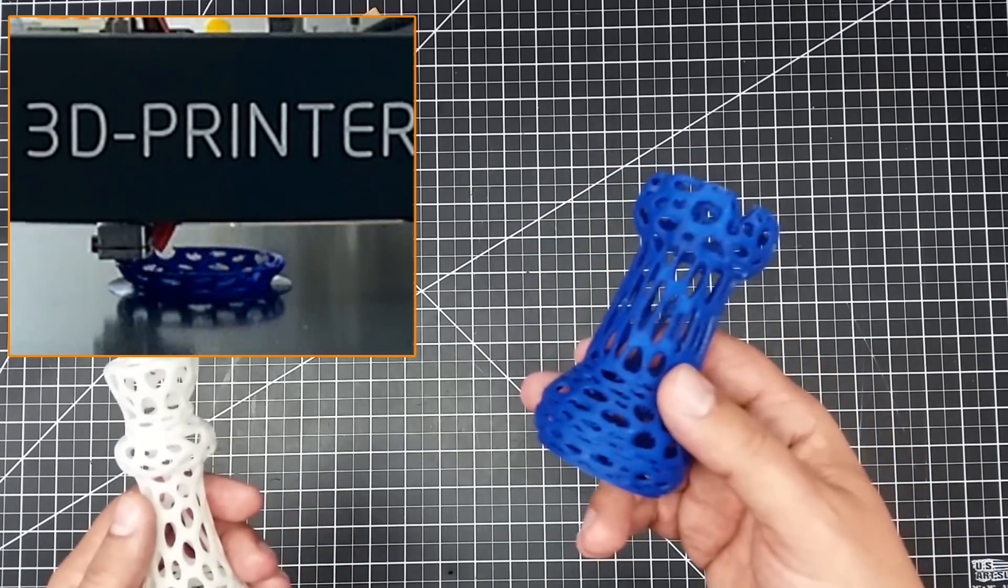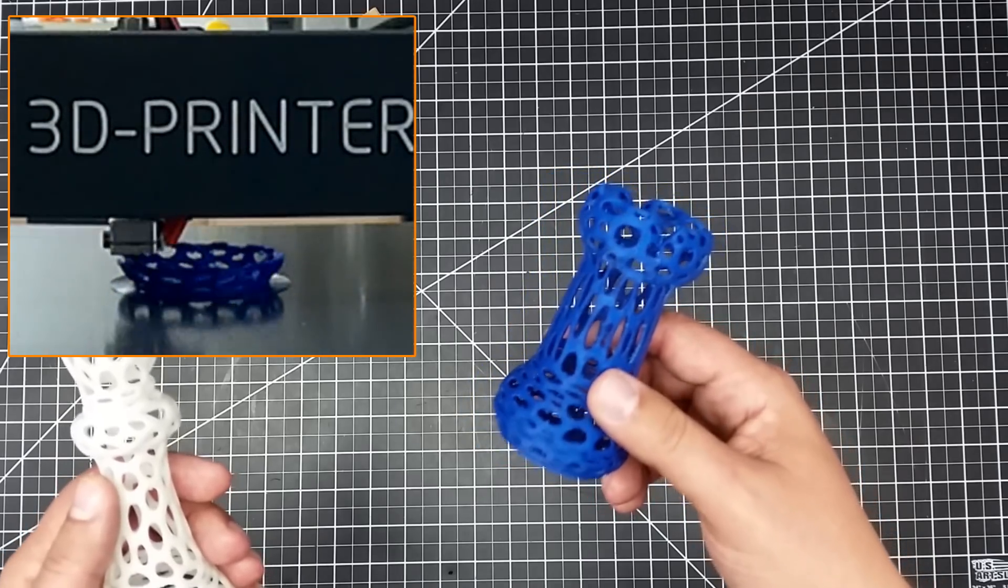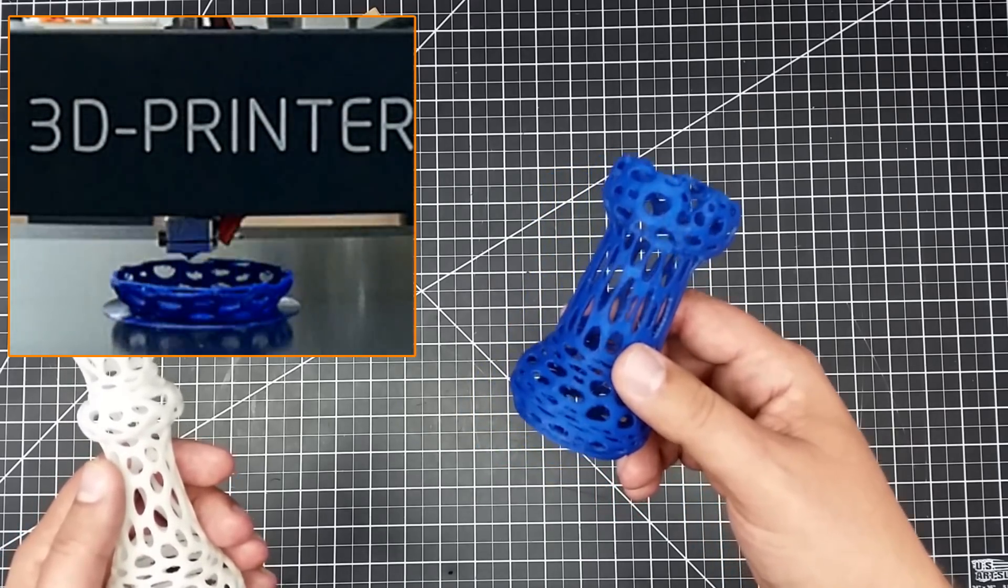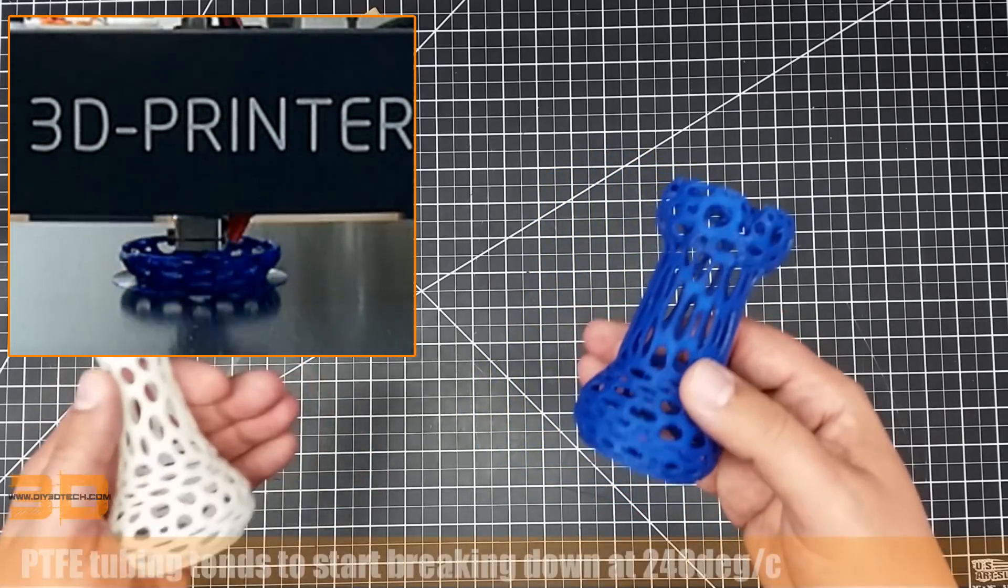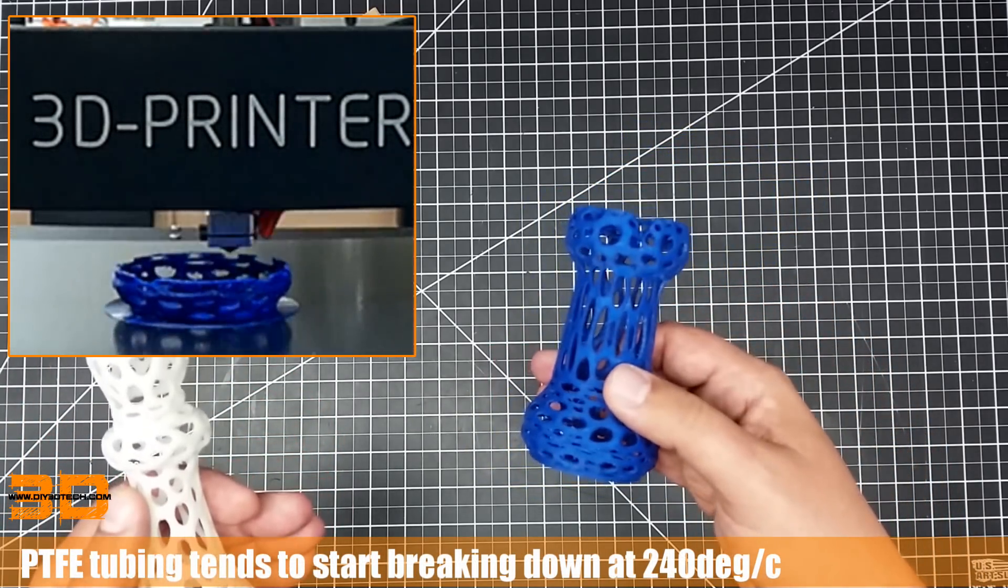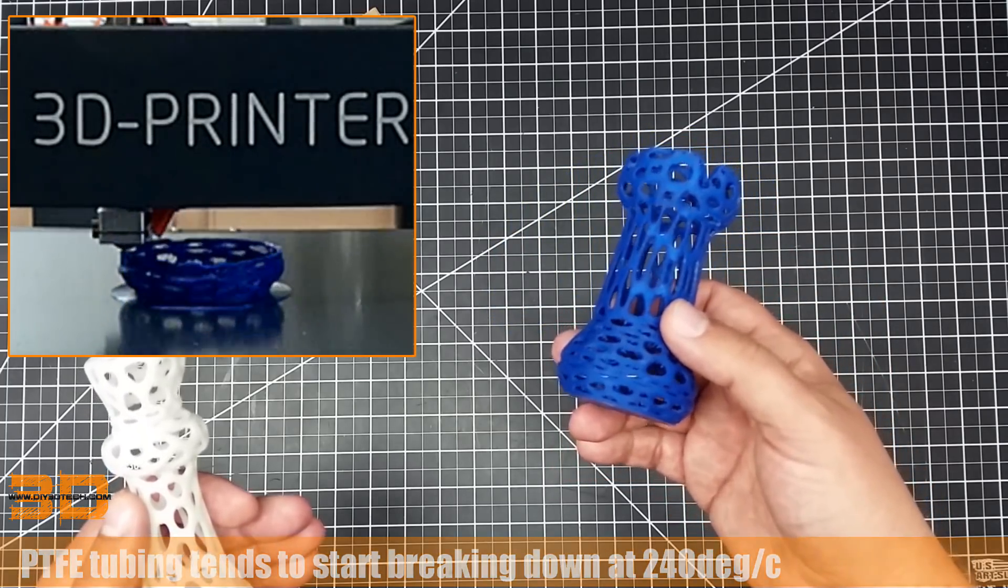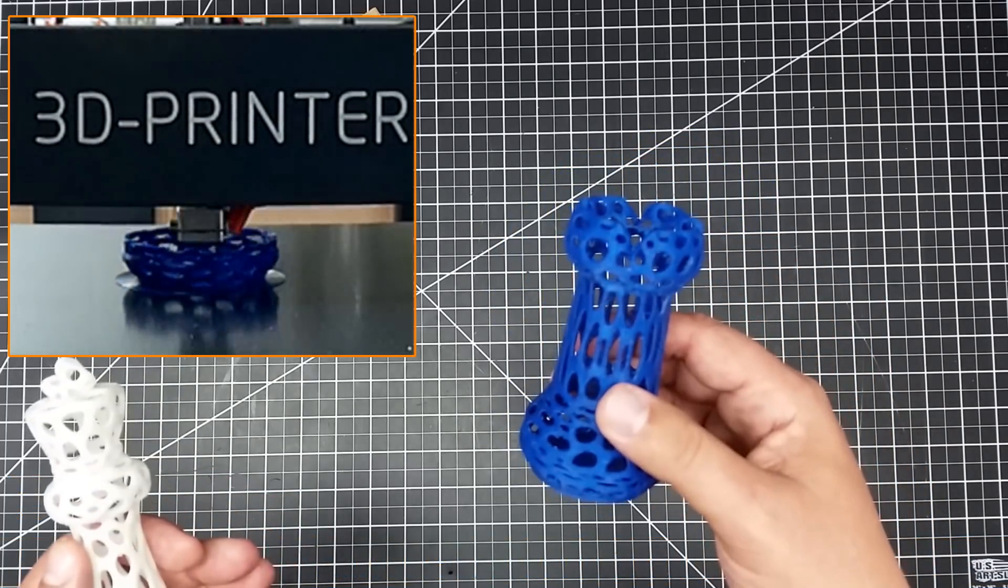The challenge is you have to work rather warm with this. So you're going to be up above ABS temperatures a little bit. And this is where you run into a little bit of a problem if you don't have an all-metal hot end. Now, with the JG Aurora, I ran this at 245°C on the hot end and 100°C on the bed and printed really nice.